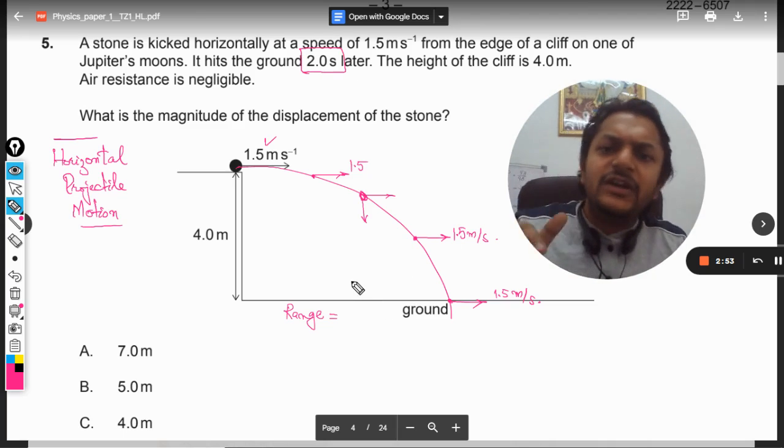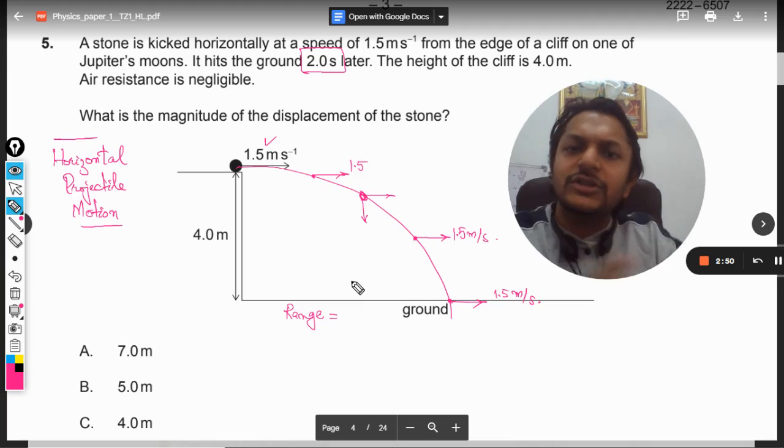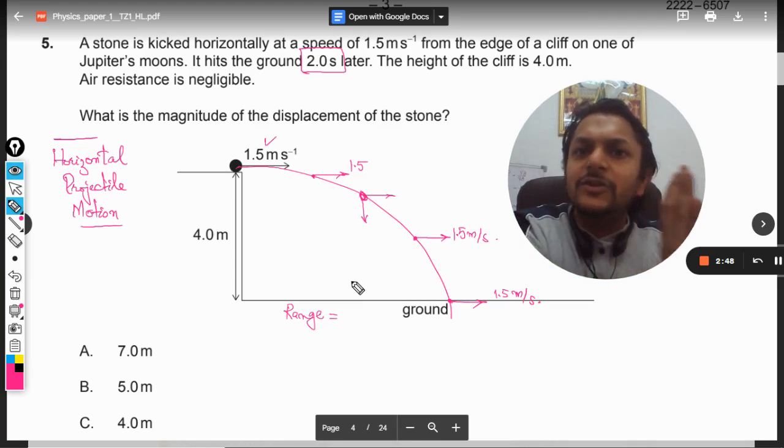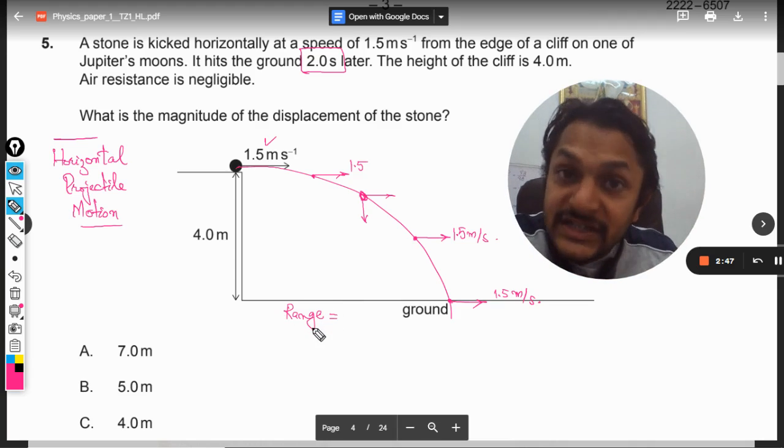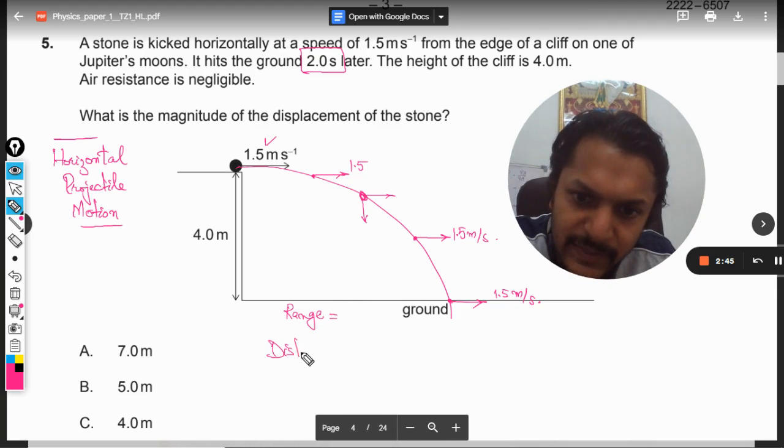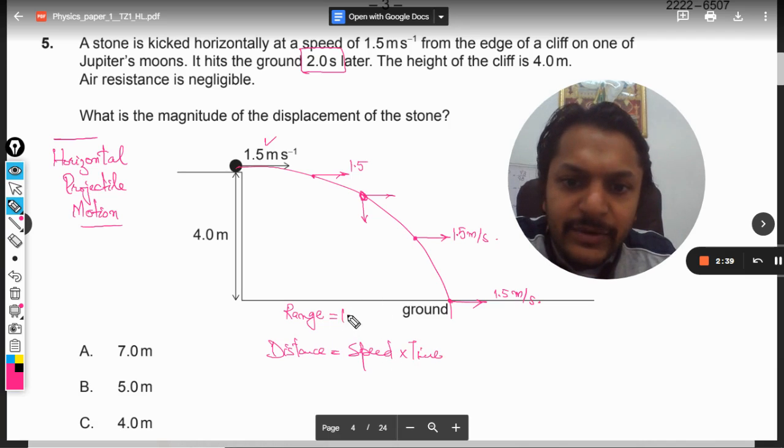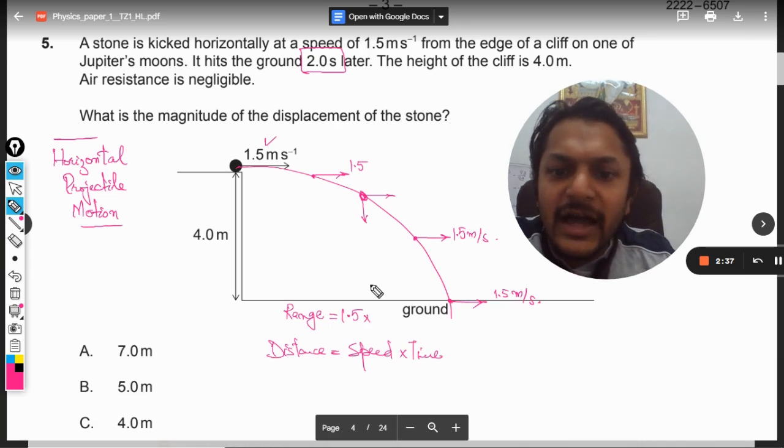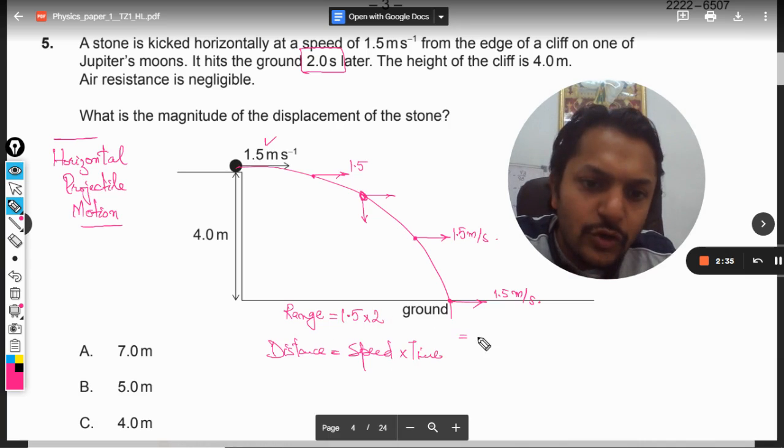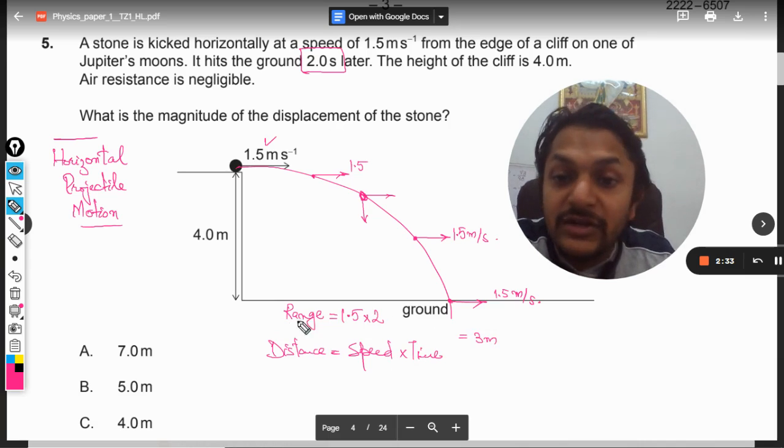We can very well find the range of the stone. If we are considering only the horizontal motion, the stone is moving at constant speed, so the distance, which is range, should be equal to speed into time. In our case it will be 1.5 times 2, so it will come out to be 3 meters. So this range is 3 meters.